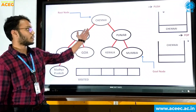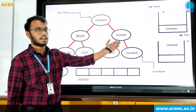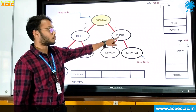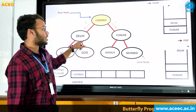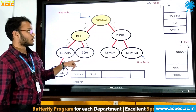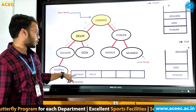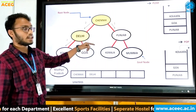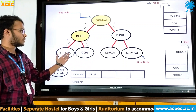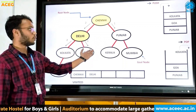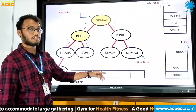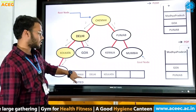Our initial node is Chennai. We will push Chennai into the stack. For Chennai, there will be two adjacent nodes: Punjab and Delhi. First we will push Punjab into the stack and then Delhi. Before we push Delhi and Punjab, we will pop Chennai. After popping Chennai, we will pop Delhi because Delhi is at the top of the stack. The adjacent nodes of Delhi are Kolkata and Goa. First we will push Goa into the stack and then Kolkata. Kolkata will then be at the top of the stack, so we will pop Kolkata and it will be in the visited list.